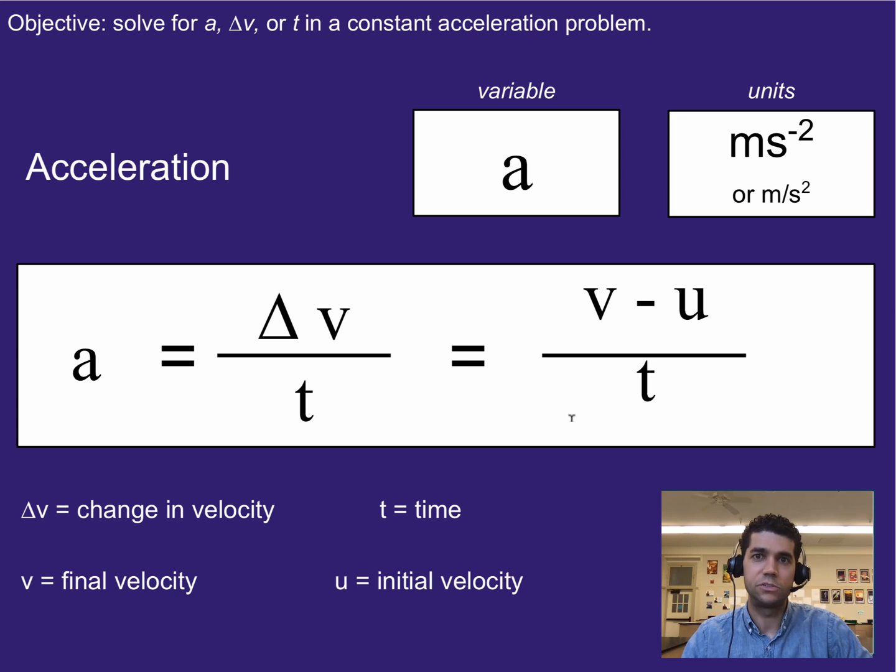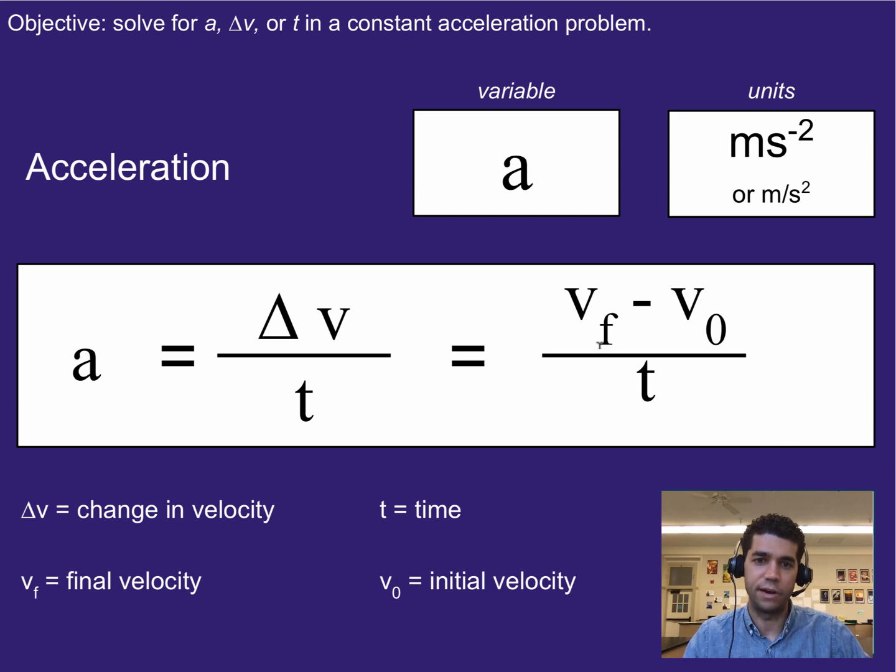Now sometimes you'll see this written in another way, where instead of v they'll put vf for the final velocity, and v0 for the initial velocity, or the velocity at time zero. It's the same thing. That's just another way of writing it.